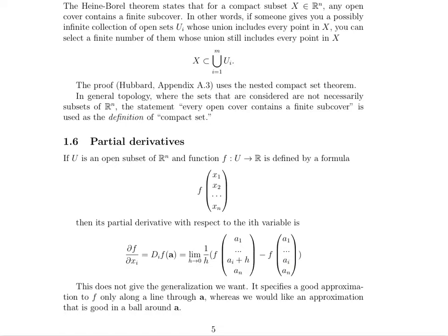When looking at the partial derivative with respect to x sub i, you add the increment on that i-th component input value. This does not really give the generalization we want — it specifies a good approximation to f only along a line through a. A lot of the time we don't care just how f is changing with respect to one particular variable; in the real world, a lot of the components are changing all at the same time. So that brings us to our next topic.